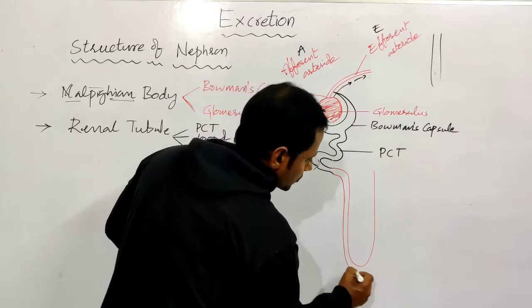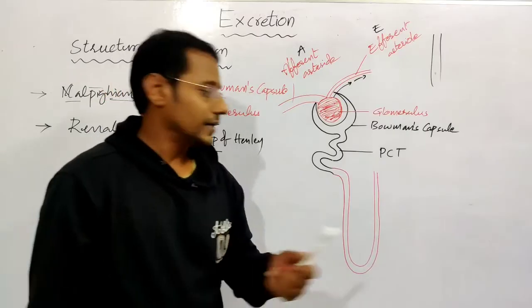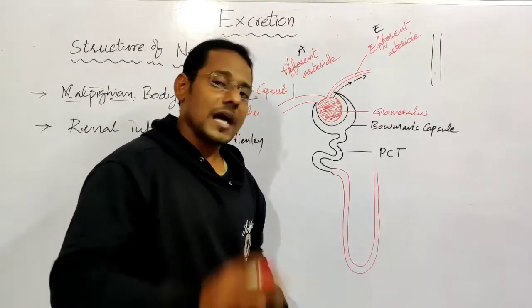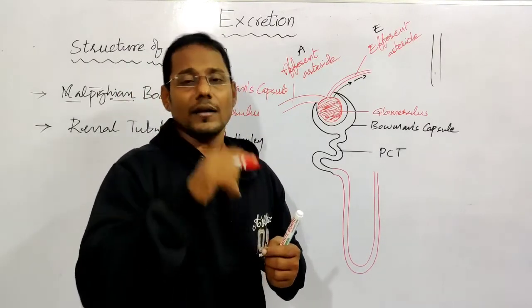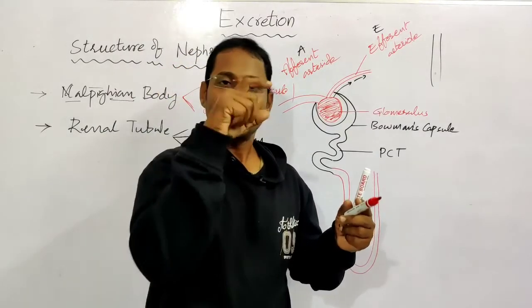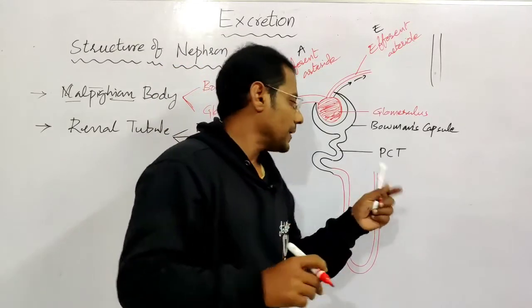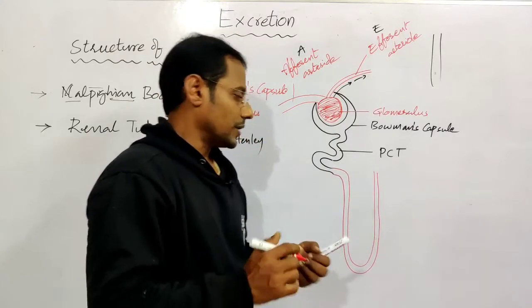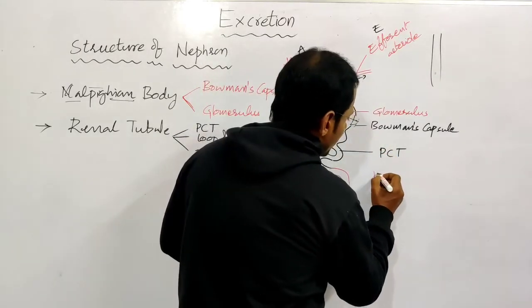After the proximal convoluted tubule, there is a U-shaped tube called the loop of Henley. It is named after the scientist Henley who discovered it in the nephron. The loop of Henley is shaped like a hairpin - it goes down and comes back up. So that hairpin-shaped structure is called the loop of Henley.